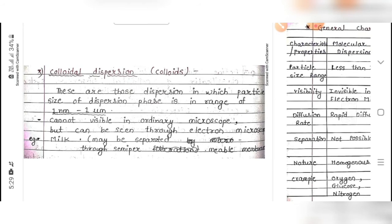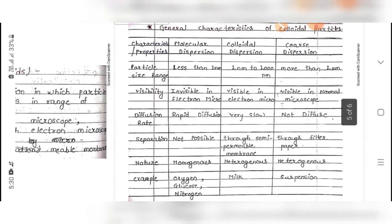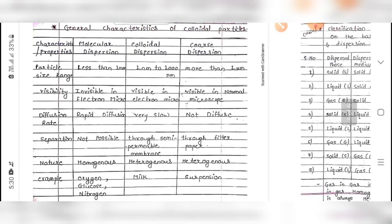Third classification is colloidal dispersion, also known as colloids, as already seen in the introduction. These are dispersions in which the particle size of the dispersed phase is in the range of 1 nanometer to 1 micron (1000 nanometers). They cannot be visible in an ordinary microscope but can be seen through an electron microscope. They are separated through a semi-permeable membrane. An example is milk.